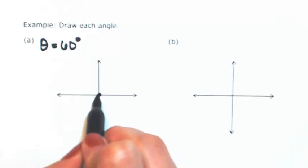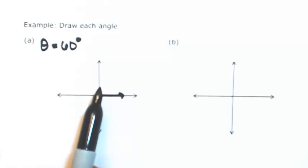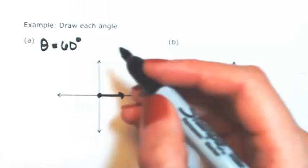So again, starting from standard position, we know that a quarter of the way is 90 degrees. So 60 would be about, well, would be two-thirds of that.